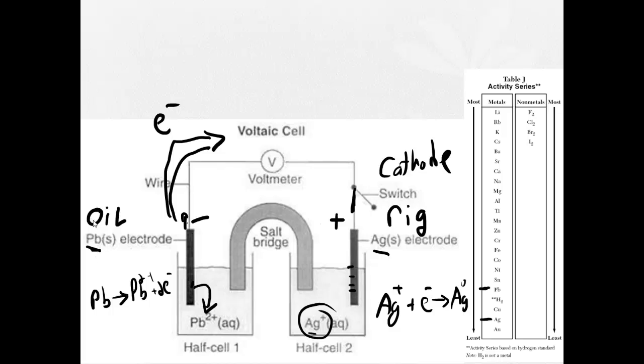An ox. Oxidation is losing. This is the anode. And just like an anion is negative, the anode is also negative.